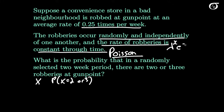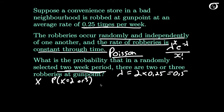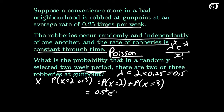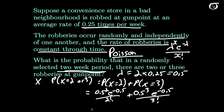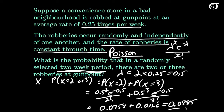The Poisson formula is lambda to the x times e to the minus lambda, over x factorial, where lambda is the average number in the timeframe we're discussing. We're talking about a two-week period, and the average per week is 0.25, so lambda equals 2 times 0.25, or 0.5. We want the probability that X equals 2 plus the probability X equals 3. Plugging into the Poisson formula for each, we get 0.0758 plus 0.0126, which gives 0.0885 rounded to four decimal places.